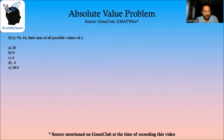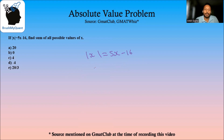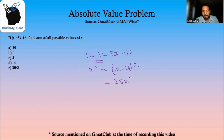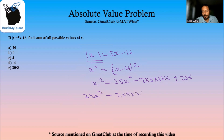Now let's use another method to solve this. So mod of x is equal to 5x minus 16. We are going to use the method of squaring both sides. We can use this method when you have either one absolute value or only two absolute values in the equation and nothing else. So let's square both sides. If we square this, we'll get x squared is equal to 5x minus 16 whole square, which becomes 25x squared minus 2 into 5 into 16x plus 256.